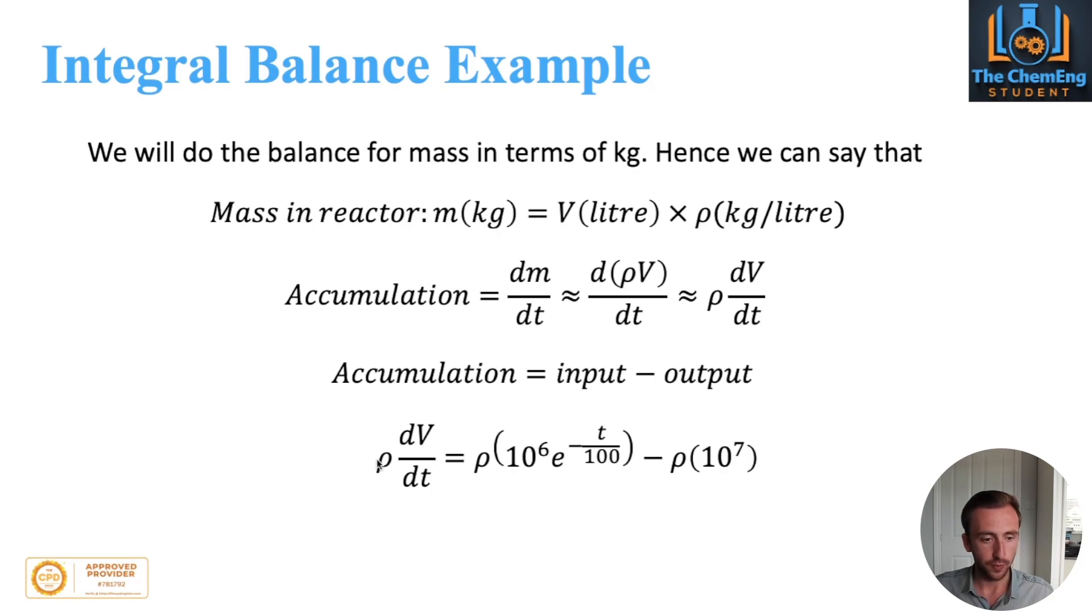So we can tidy this up because we have density on all three terms. So we end up with this equation here, dv by dt, and so forth.